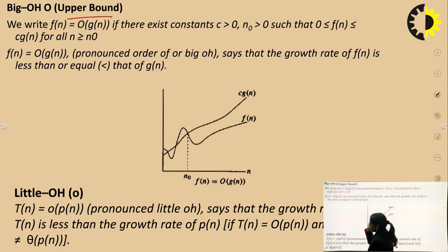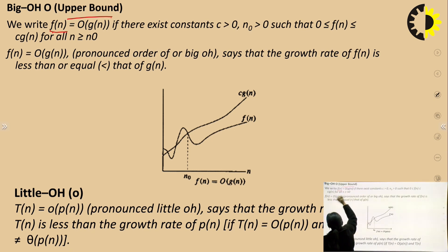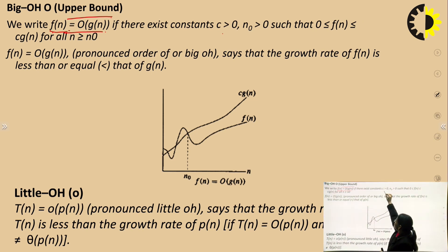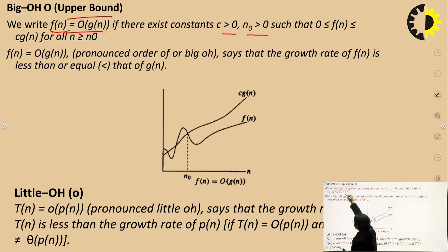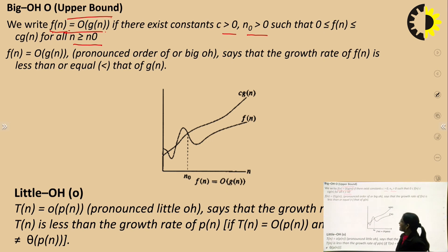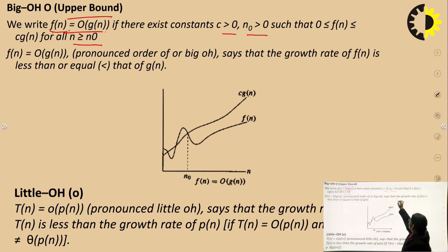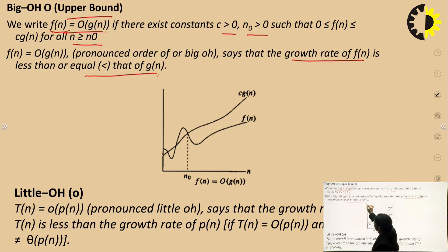The definition of Big O: f(n) = O(g(n)) if there exist constants c > 0 and n₀ > 0 such that f(n) ≤ c·g(n) for all n ≥ n₀. So f(n) = O(g(n)), pronounced 'order of g of n', says that the growth rate of f(n) is always less than or equal to that of g(n).